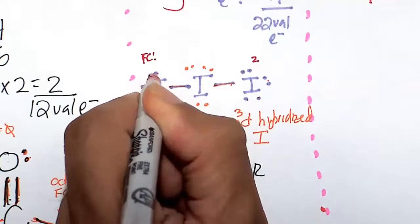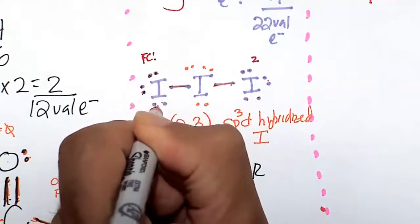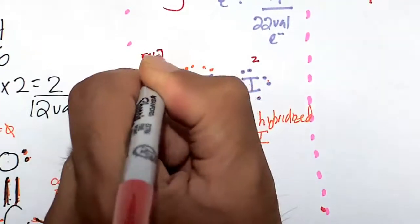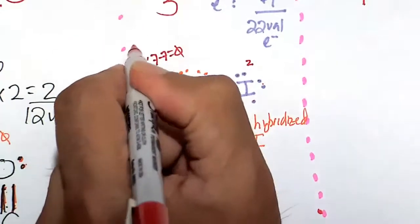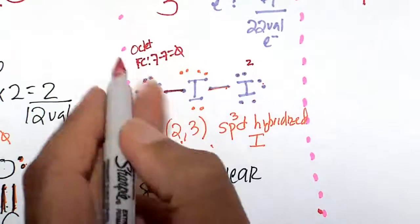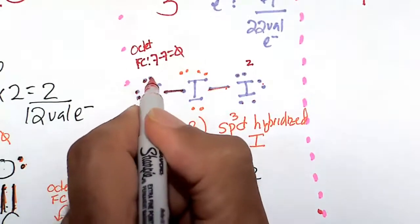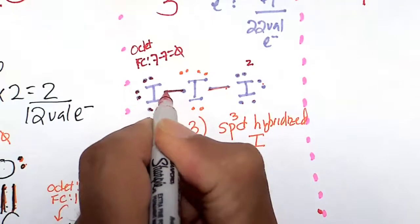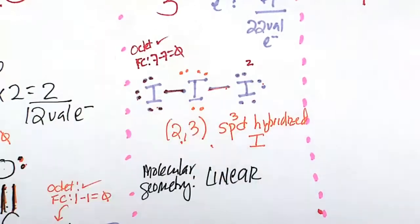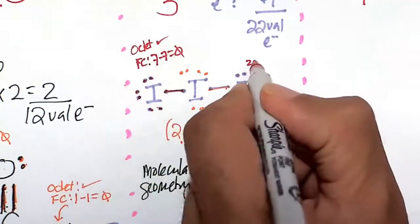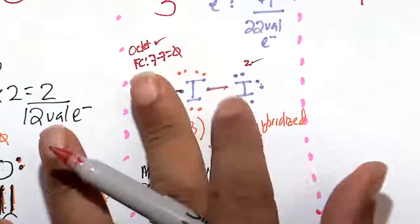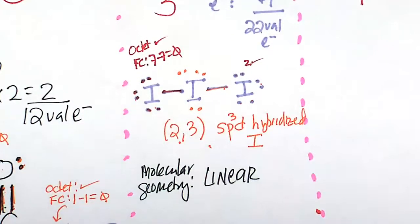So 1, 2, 3, 4, 5, 6, 7. Iodine is happy at seven. Seven minus seven is zero. Octet rule for this outer iodine: 1, 2, 3, 4, 5, 6, 7, 8. So this iodine is properly attired with the octet rule. Same thing with this iodine because it's still single bonded. So that's fine. We flip the molecule. These outer iodine substituents are going to be the same.